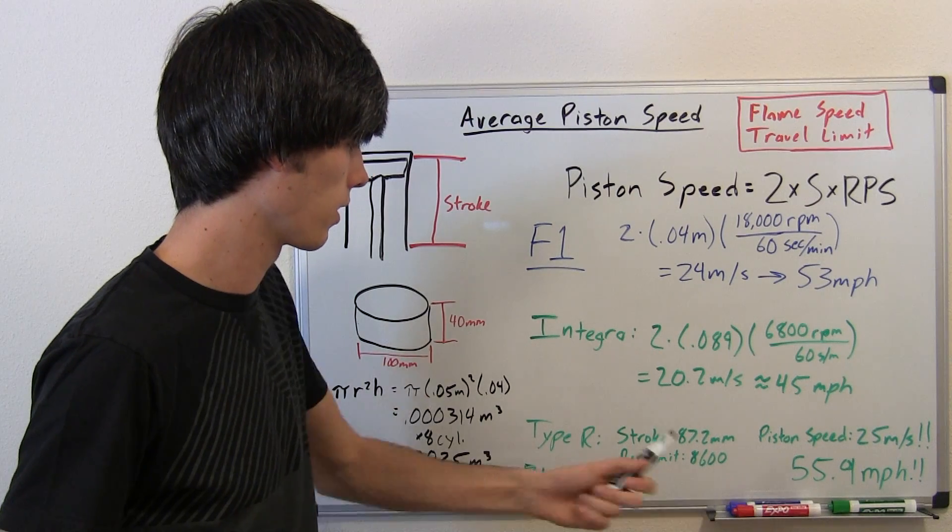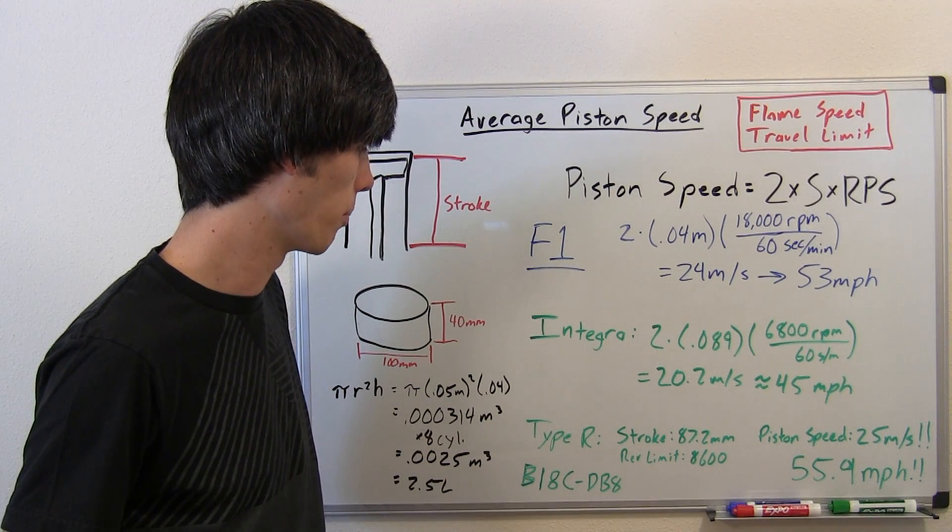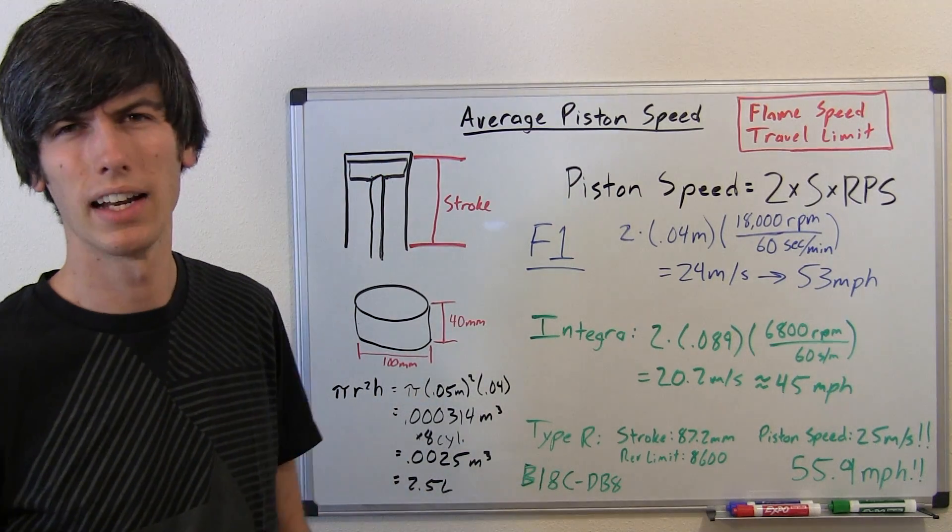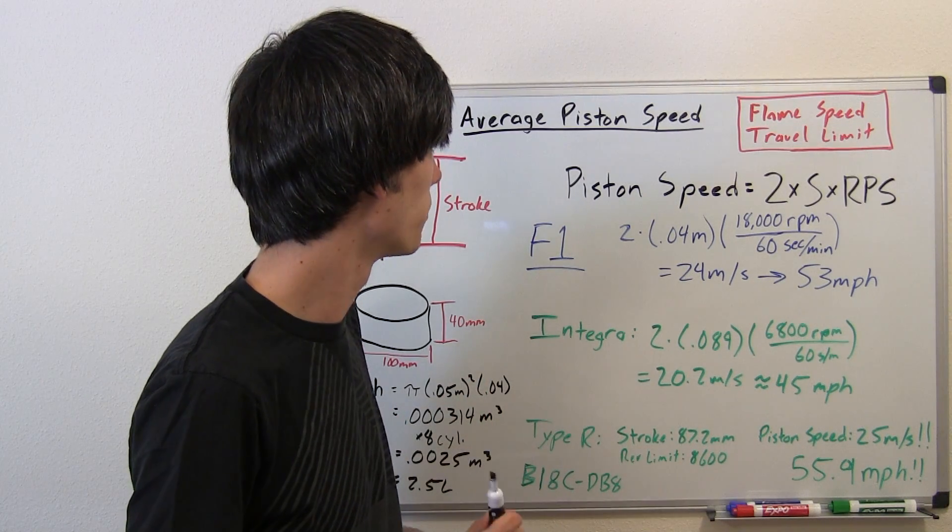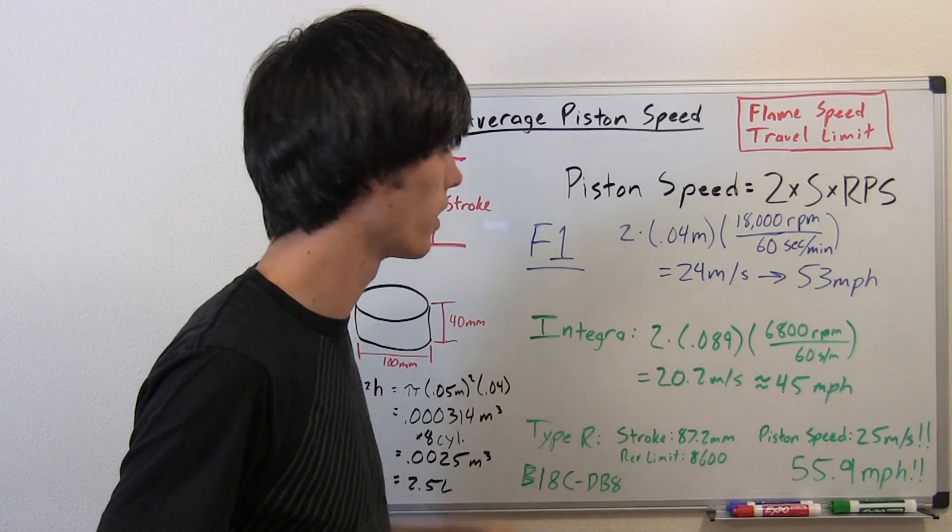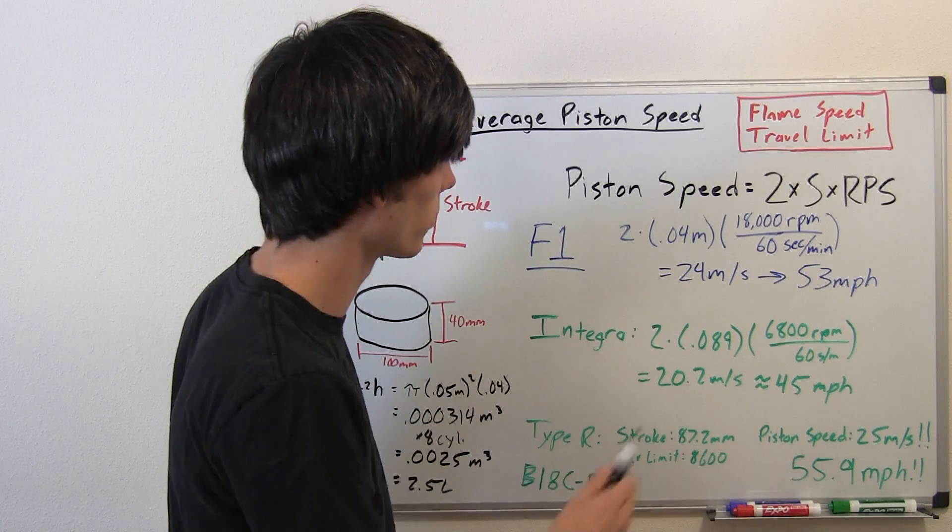Actually, there's probably other cars that can match that. An S2000 would probably be better than that, if not around that. But anyways, a Type R can hang with an F1. That's what we learned from this. No, it really can't.